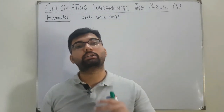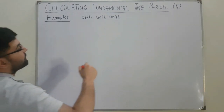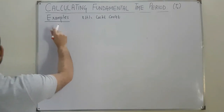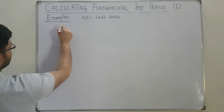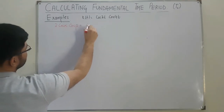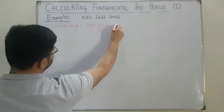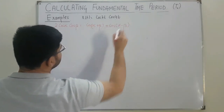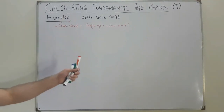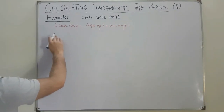For this conversion we use the formula: 2·cos(α)·cos(β) = cos(α + β) + cos(α − β). Applying it here, α = 2t and β = 4t.